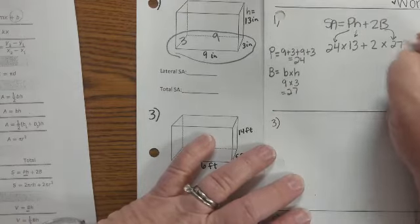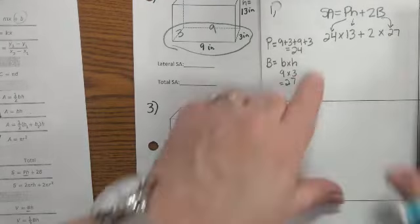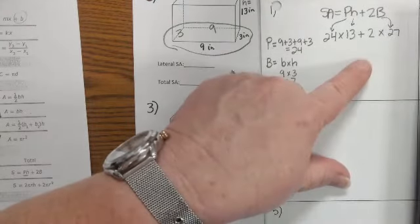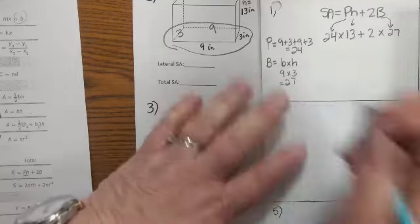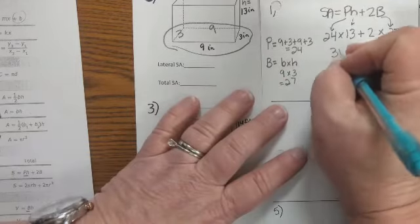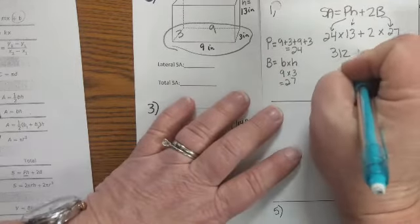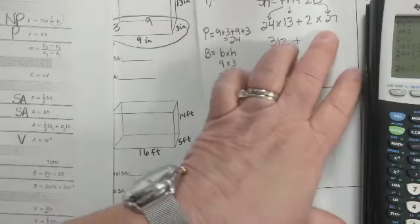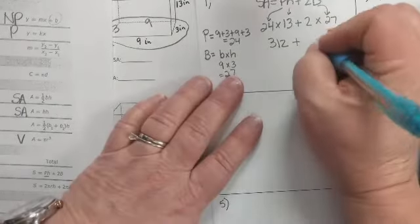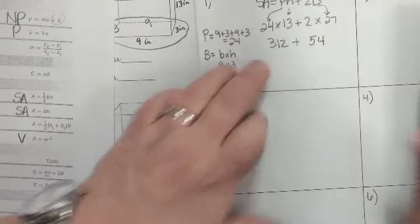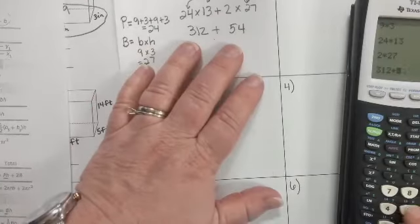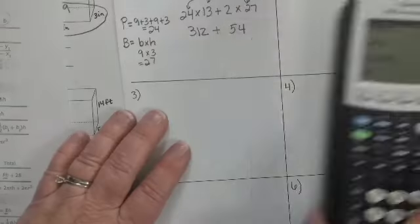Put that in my calculator. Nine times three is 27. You see, all of this doesn't take very long. I'm taking twice as long because I'm talking about it. And that is where my big B goes, that's 27. Now it's just a matter of doing 24 times 13 and hitting enter and getting 312, plus 2 times 27, and I get 54.